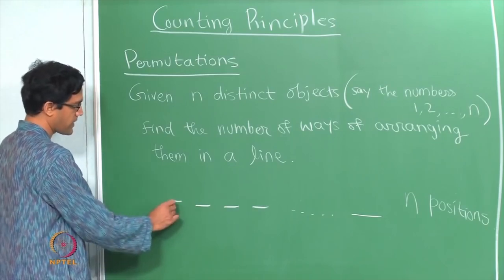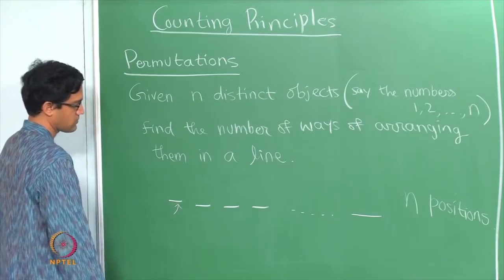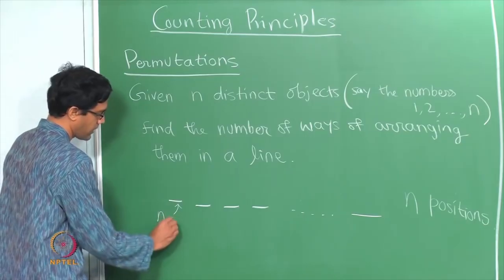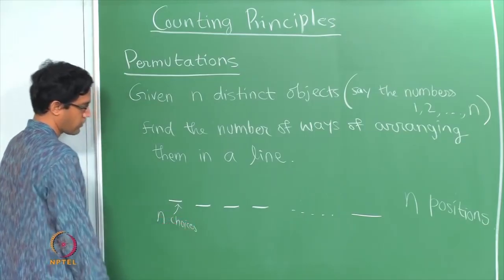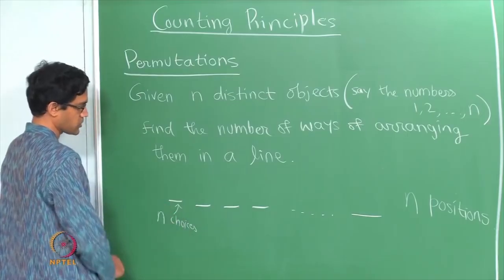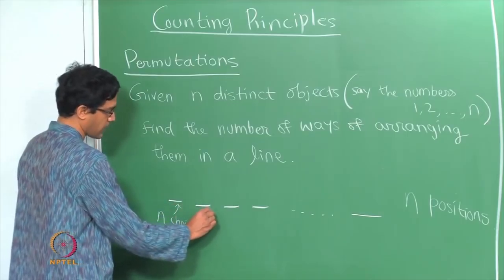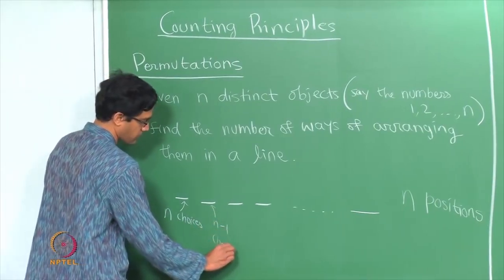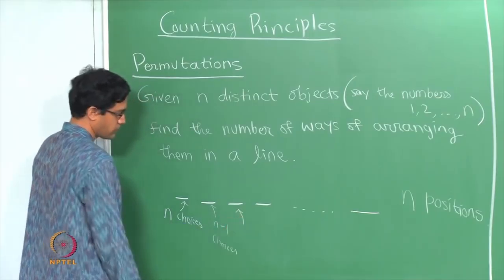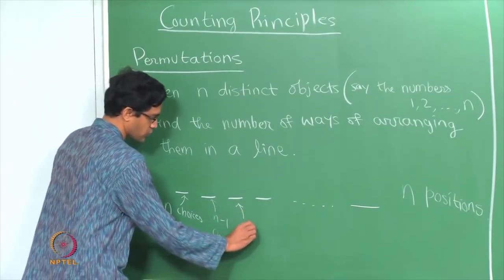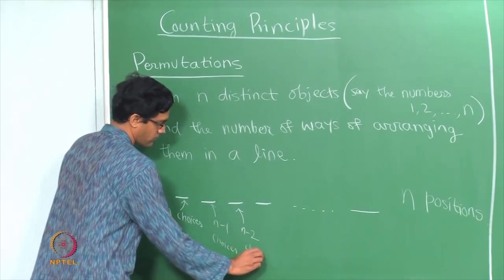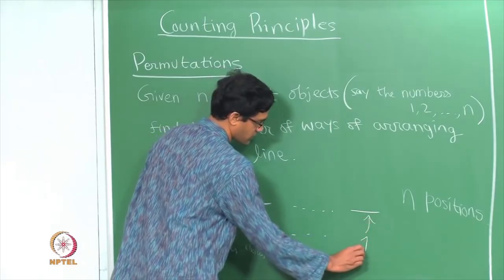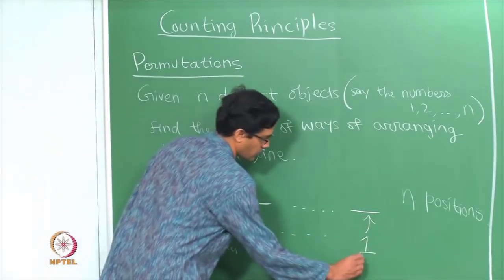You first figure out how many ways there are of filling the first position — there are n choices, since you can put any of the n distinct objects. Having filled the first position, there are n-1 remaining choices for the second. With the first two filled, there are n-2 remaining choices for the third position, and so on, until you finally get to the very last position where there is only one choice remaining.